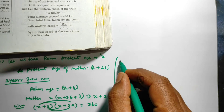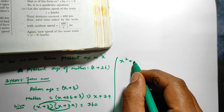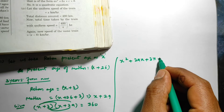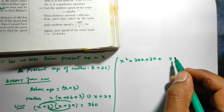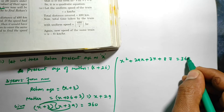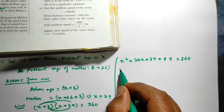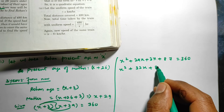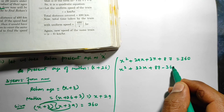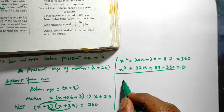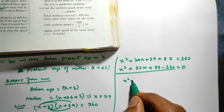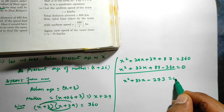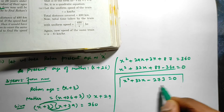Expanding using binomial multiplication: x² + 29x + 3x + 87 = 360, which simplifies to x² + 32x + 87 − 360 = 0, giving x² + 32x − 273 = 0. That is the required quadratic equation for the age problem.